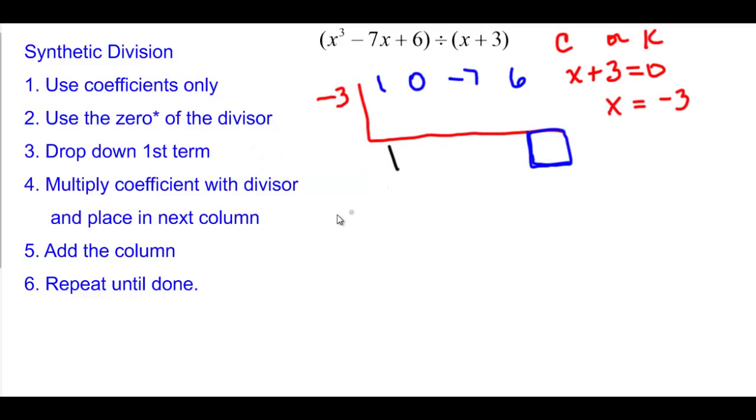Multiply on the diagonal, and then place it inside. Add on the column. This gives us negative 3. Negative 3 times negative 3 on the diagonal gives us a positive 9. And when we add, we get 2. And 2 times negative 3 will give us negative 6. And when we add the column, we get 0. So remember, this is our constant. This is our x, and this is our x squared. So we end up with x squared minus 3x plus 2, and we have no remainder.